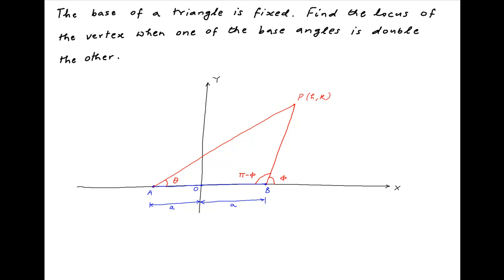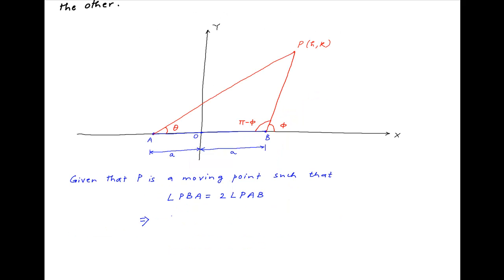Therefore, angle PBA is equal to pi minus phi. Now we are given that point P is a moving point such that angle PBA is equal to 2 times angle PAB. In other words, pi minus phi is equal to 2 theta.